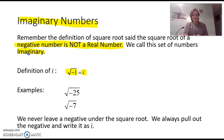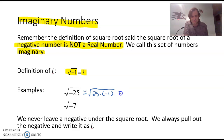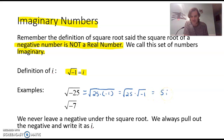So from there, if we accept that the square root of negative one is something we'll call i, we can look at these two examples. What is the square root of negative 25? Well, I can use my properties of radicals and real numbers to separate this. Negative 25 is 25 times negative one, so I can rewrite the square root of negative 25 as the square root of 25 times the square root of negative one. The square root of 25 is 5, and by definition the square root of negative one is i. So we would write that as 5i.